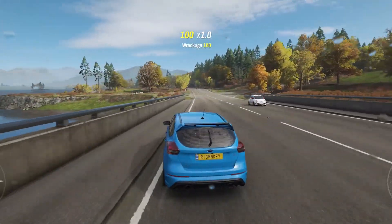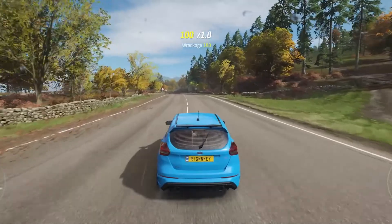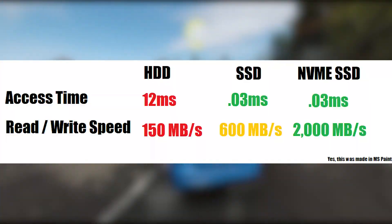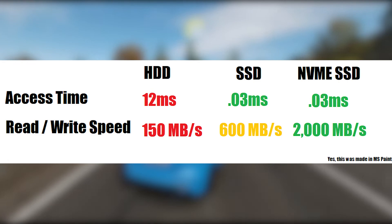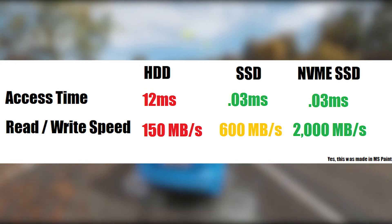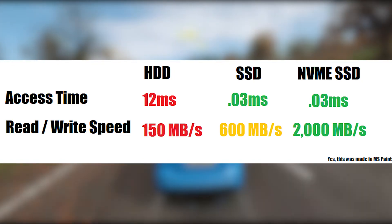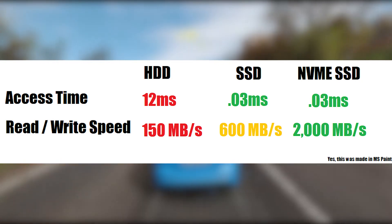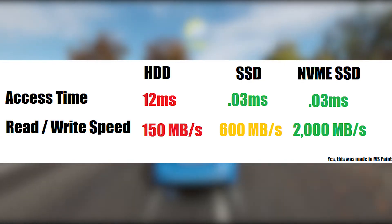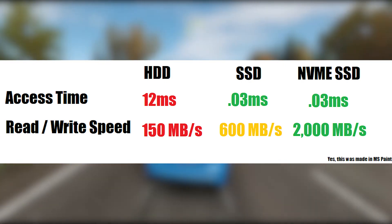Both SSDs, whether NVMe or not, will significantly beat out any hard disk drives in read/write speed. Here's a quick graphic to explain the differences one more time: hard disk drives have the slowest access time and the slowest read/write speed; solid state drives have much quicker access times and a much faster read/write speed; however, NVMe drives have a similar access time to SSDs, but a much faster read/write speed.